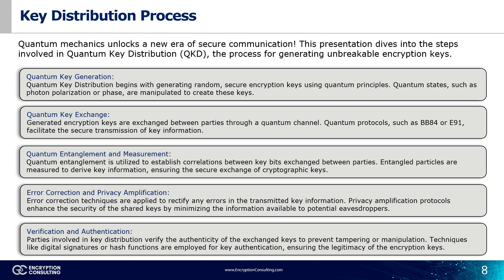Quantum entanglement is utilized to establish correlations between the key bits exchanged between parties. Entangled particles are measured to derive key information, ensuring the key exchange is secure, and the use of entanglement makes the key distribution process resilient to interception. Error correction techniques are applied to rectify any discrepancies or errors in the transmitted key information. Privacy amplification protocols further enhance the security of shared keys by minimizing the information available to potential eavesdroppers, ensuring the reliability and confidentiality of the key distribution process.